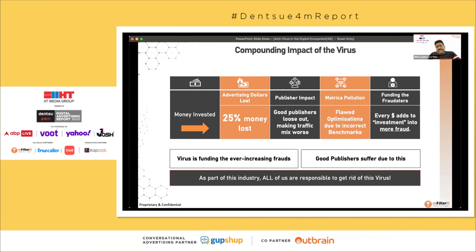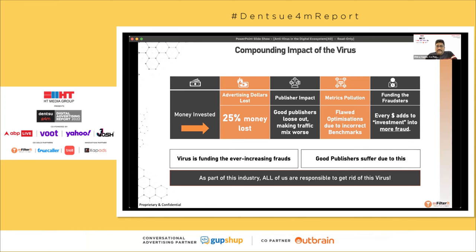What is the compounding impact of the virus? First, you lose 25% of your money straight away today — all advertisers on this call have already lost 25% of their money. But it doesn't stop there: when you burn this money, you also pay bad publishers at the cost of good publishers. Good publishers lose out on traffic and dollars they should receive, while bots eat up the budget. Your optimization data becomes polluted, and you're measuring your team's and product performance against flawed data.